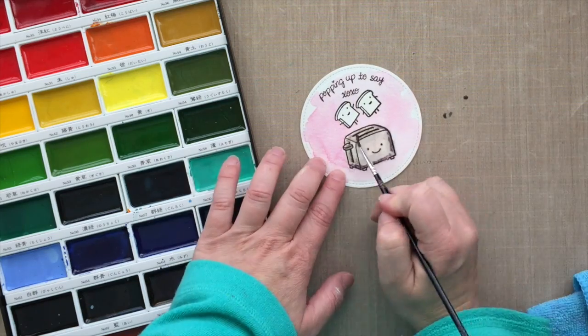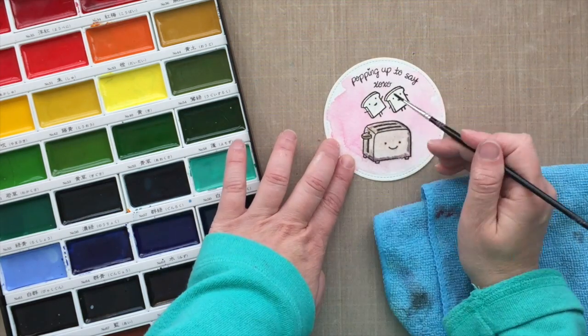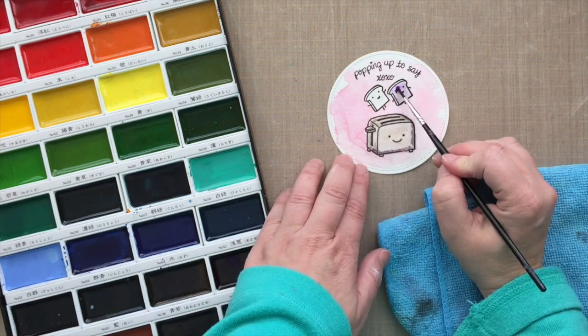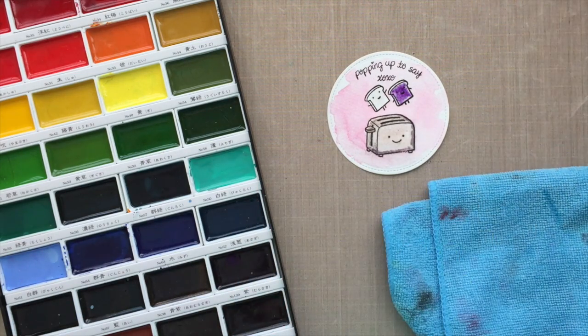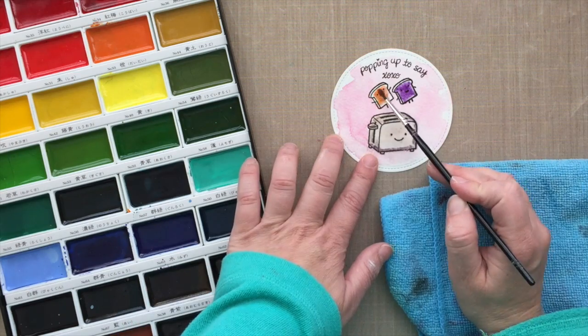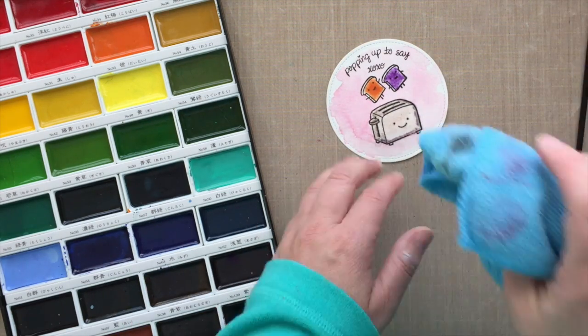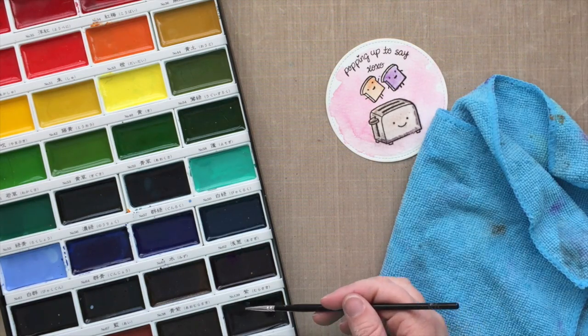So I went in and added a little bit of watered down black there and I decided to give my toaster a break. So I'm going to focus on the bread and I decided to make it a peanut butter and jelly sandwich, which is hilarious because you wouldn't have a peanut butter and jelly sandwich popping up out of your toaster because that would be gross and ruin your toaster, but whatever. It's still cute, isn't it?